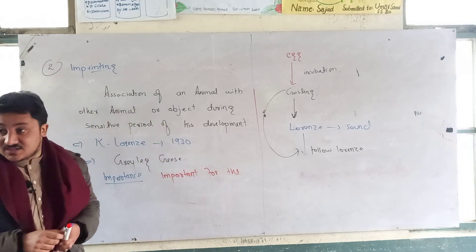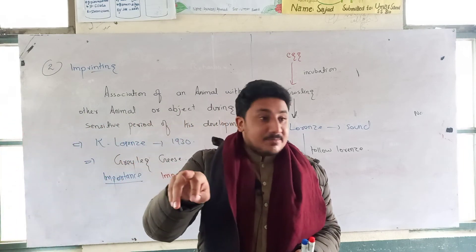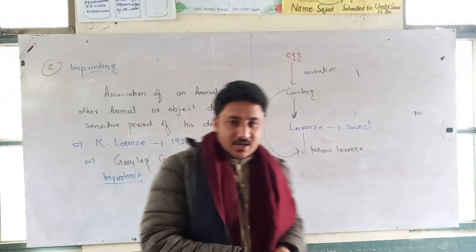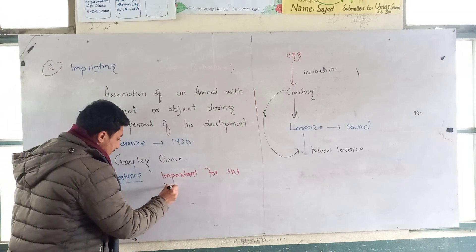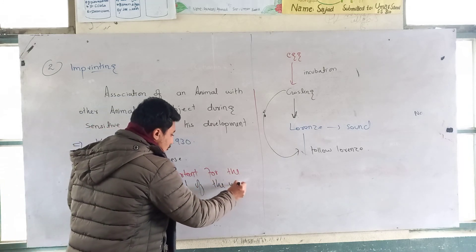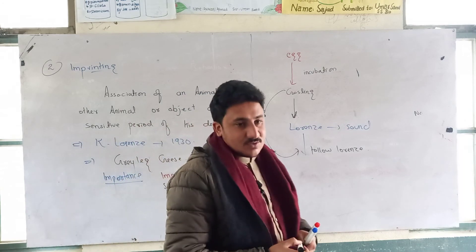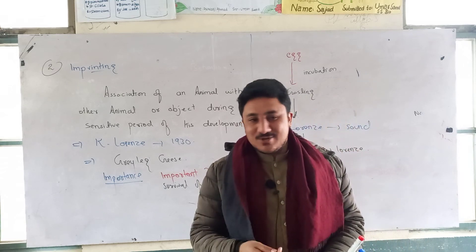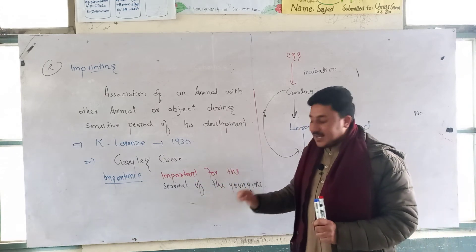Imprinting is important for the survival of young ones because they are unable to protect themselves from predators. It is an important part of survival, as the young one stays close to a caretaker for protection.